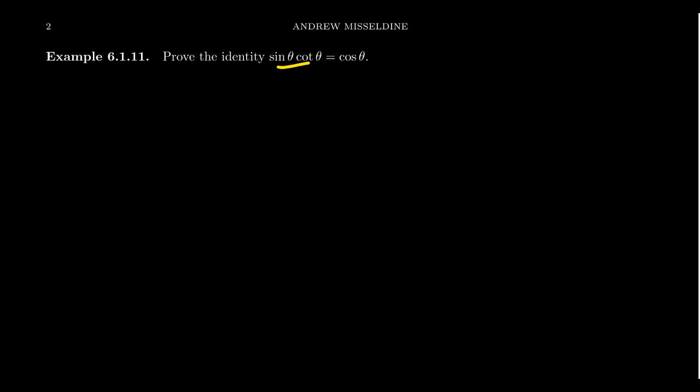I don't have these proofs memorized — I'm reproducing them in real time as we're recording this video. When I look at this, I have to pick a side: left-hand side or right-hand side? The left-hand side is the product of two trigonometric functions, while the right-hand side is just cosine. So the left-hand side looks more complicated, and that's the side I'm going to start with. I always like to start by writing 'left-hand side,' then writing whatever that left-hand side is — it helps me remember I can only work with one side at a time.